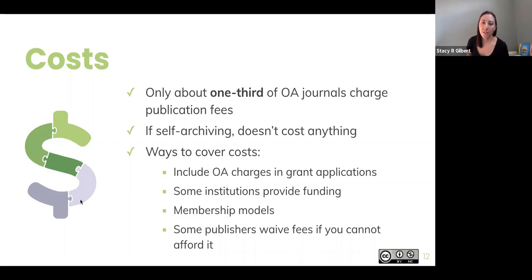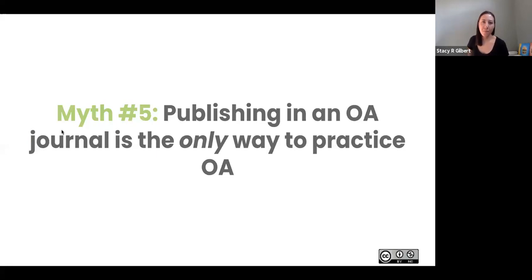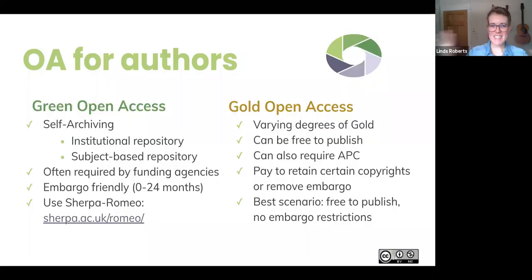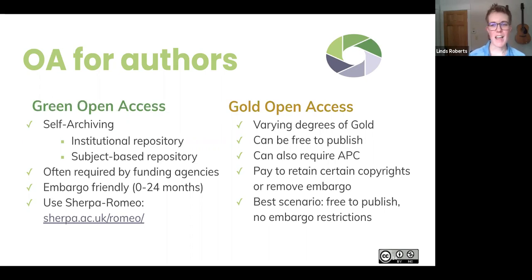Some publishers will waive your fees if you cannot afford them — if a journal really wants your article, you can talk to them about waiving the fee. Another myth is that publishing in an open access journal is the only way to practice open access. There are lots of different ways to participate at different levels. For authors, self-archiving — also called green open access — often means putting your work into an institutional repository or a subject-based repository like arXiv for STEM. Funding agencies like the National Institutes of Health want research they fund to be freely available, so this is increasingly a requirement.